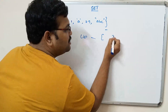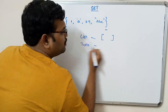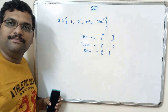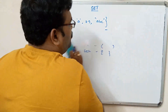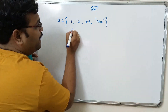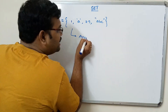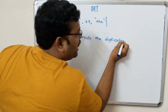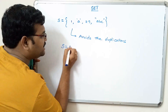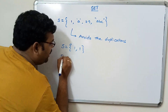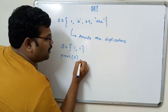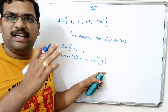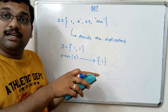In a list, elements are in square brackets; in a tuple, elements are in parentheses; whereas in a set, elements are in curly braces. Also, a set avoids duplication — if you write s = {1, 1} and print s, the result will be only {1} because it eliminates all duplicates.